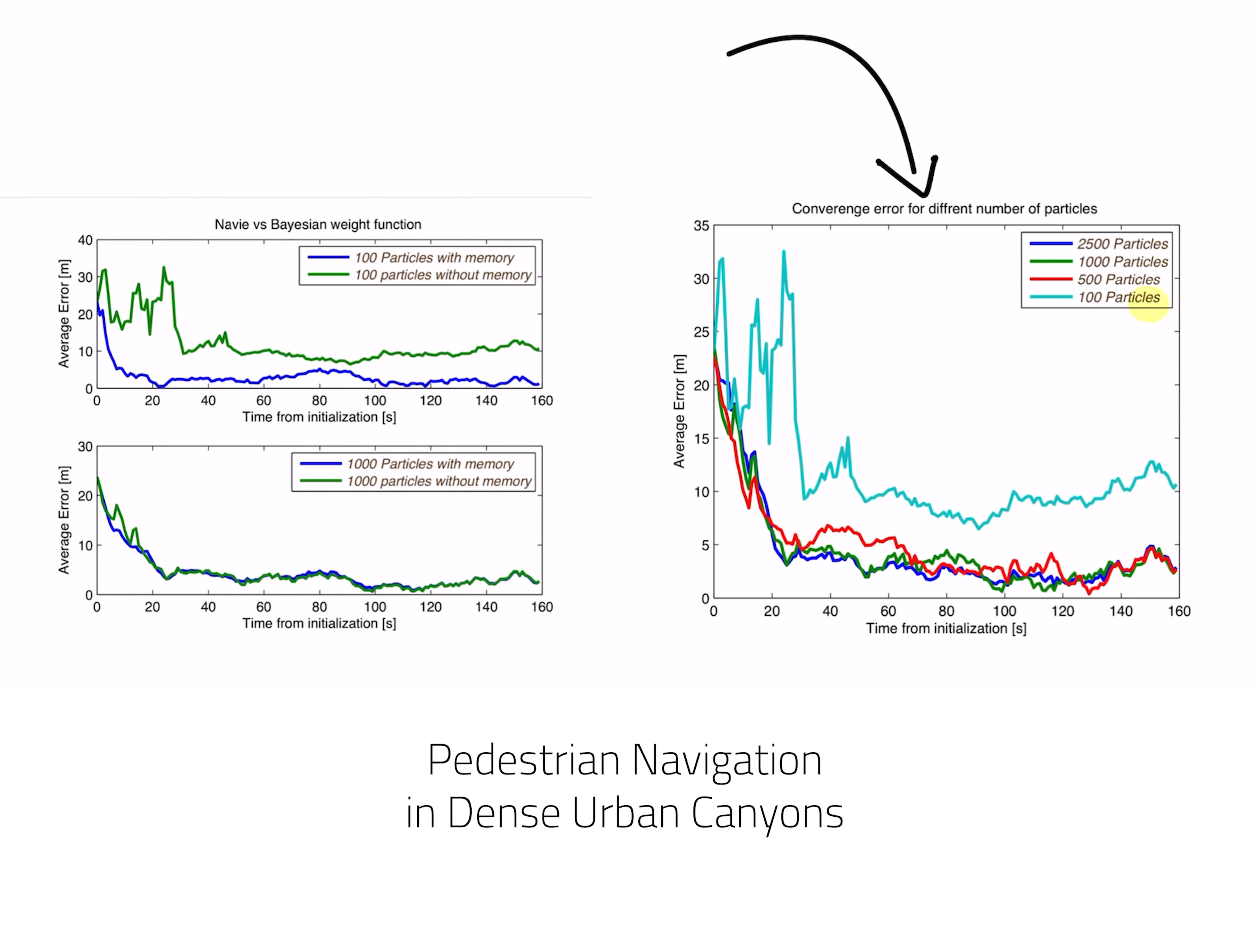On the right, one can see the accuracy graph when we are using 100 particles, 500 particles, 1000 and 2500 particles. One can see that when we are using 100 particles, the accuracy level is approximately 10 meters. But when we reach 500,